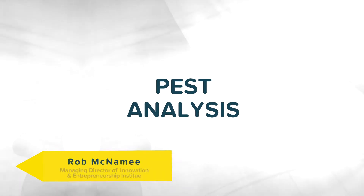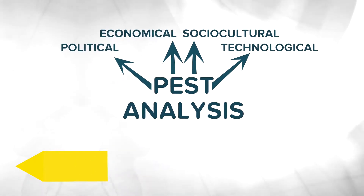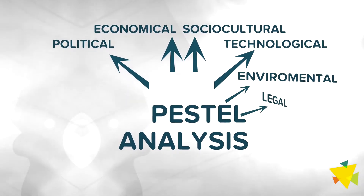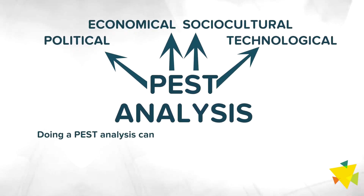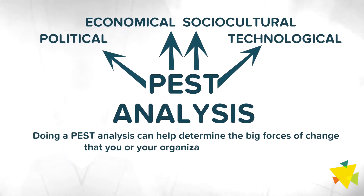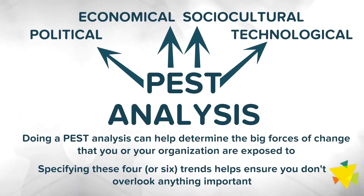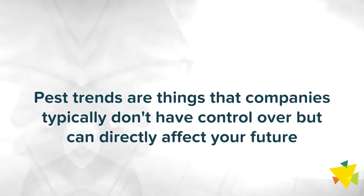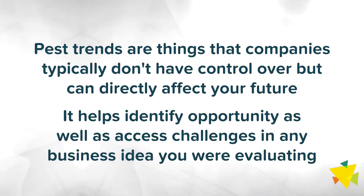A simple and widely used framework that helps you analyze trends is called PEST analysis. PEST is an acronym that stands for political, economic, sociocultural, and technological, referring to four big categories into which various trends can be organized. There's another version called PESTal that breaks out environmental and legal as separate categories. Doing a PEST analysis helps you understand the big picture forces of change. PEST trends are things that companies typically have no control over but which directly affect your future. From this analysis you can identify opportunities and assess challenges to an idea or existing business.